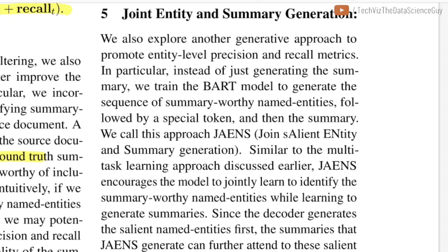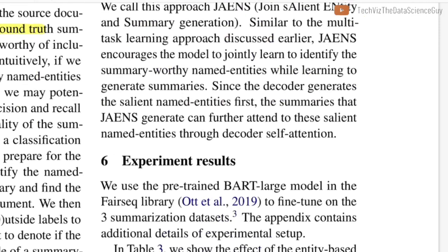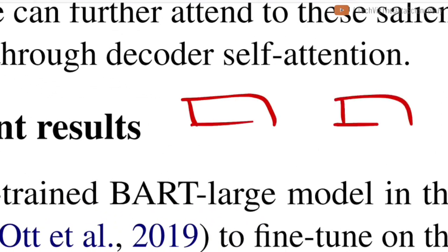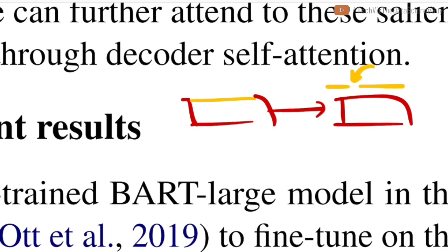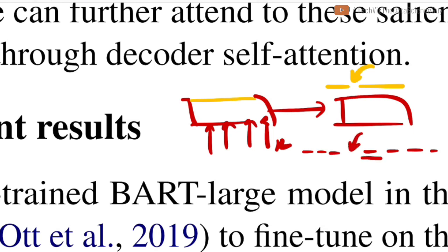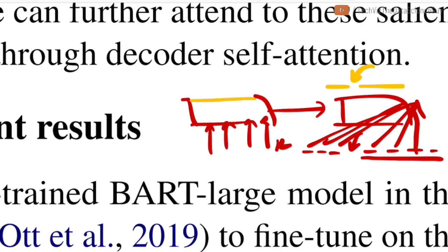The second method is called joint entity and summary generation. They still use the notion of summary-worthy named entities, but instead of adding an extra encoder loss, they modify the decoder output. Using BART, instead of generating just the summary sentence, the decoder also generates the summary-worthy named entities first — let's say three entities — followed by a special token, then the full summary sequence. This way, when generating a word of the summary, self-attention attends over both the previously generated summary words and the pre-generated named entities, making the model less likely to produce extra hallucinated entities.